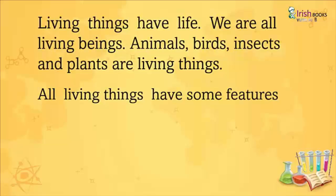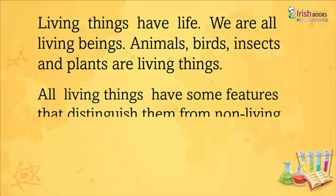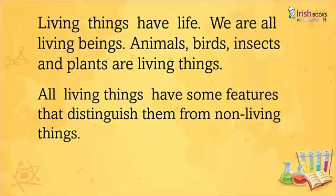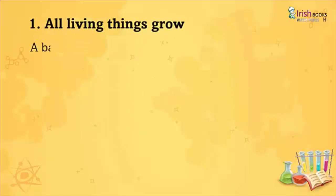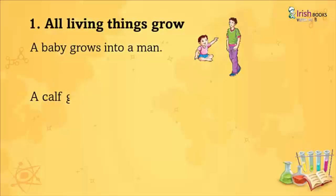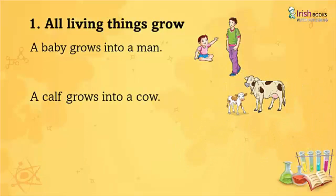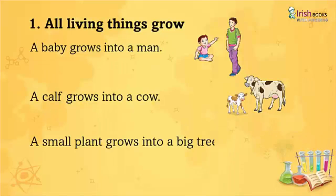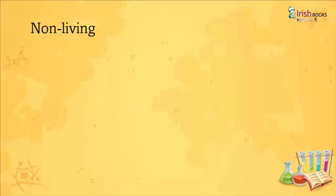All living things have some features that distinguish them from non-living things. All living things grow. A baby grows into a man. A calf grows into a cow. A small plant grows into a big tree. Non-living things do not grow.